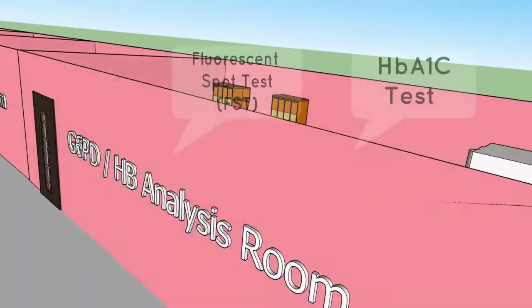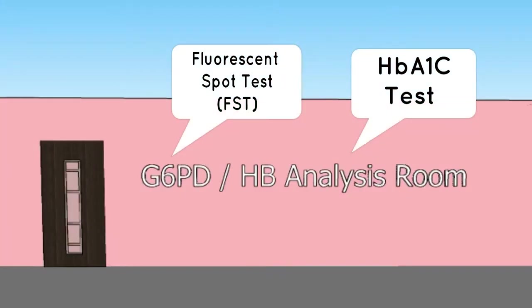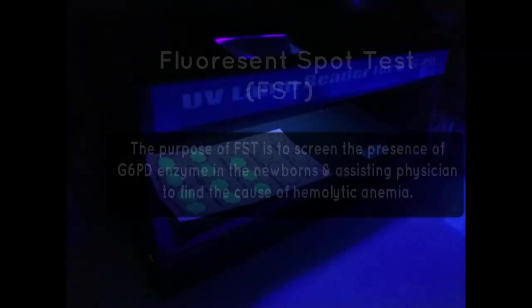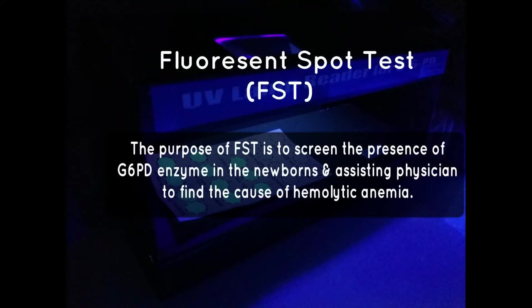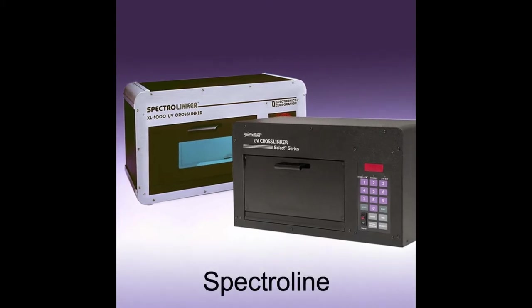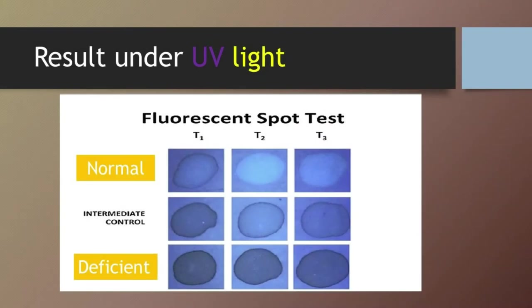Next we move on to the G6PD and hemoglobin analysis section. There are two main tests carried out here: the fluorescent spot test (FST) and the HbA1c test. The purpose of FST is to screen for the presence of the G6PD enzyme in newborns and to assist physicians in finding the cause of hemolytic anemia. The instrument involved is a spectral light consisting of a UV lamp and fluorescent analysis cabinet. If the sample appears fluorescent under UV light, the patient has an adequate level of G6PD enzyme; if it does not appear fluorescent, the patient has G6PD deficiency.